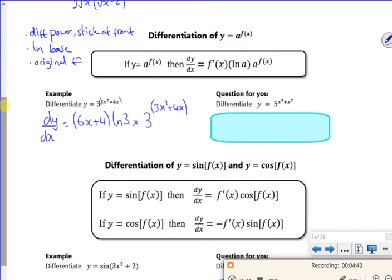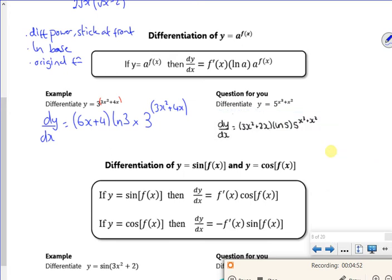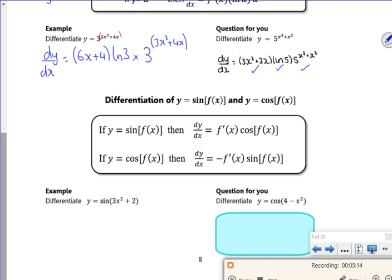So if I differentiate x³ + x², I get 3x² + 2x. Then I times by the base, so that's ln 5, and then I times by the original function. So differentiate the power, 3x² + 2x, log of the base, then the original function. Who doesn't like a bit of differentiating?